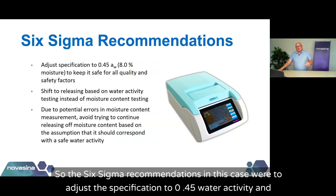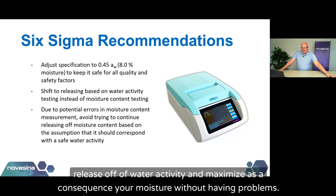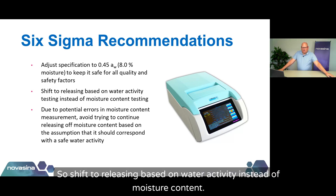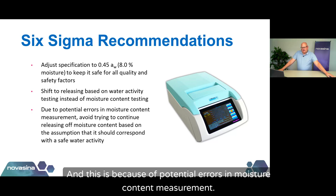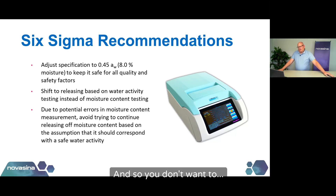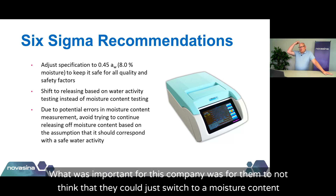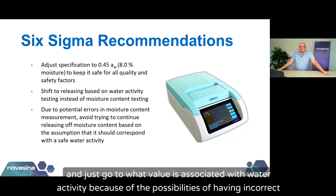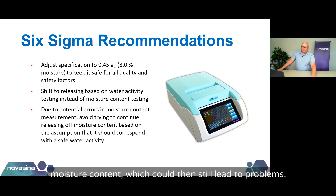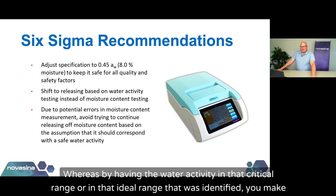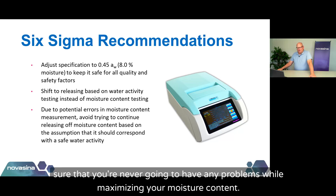The Six Sigma recommendations in this case were to adjust the specification to 0.45 water activity and release off of water activity, maximizing moisture content as a consequence without having problems. Shift to releasing based on water activity instead of moisture content, because of potential errors in moisture content measurement. What was important for this company was to not think they could just switch to a moisture content value associated with water activity — because of the possibilities of incorrect moisture content measurement, which could still lead to problems. By having the water activity in that ideal range that was identified, you make sure you're never going to have any problems while maximizing your moisture content.